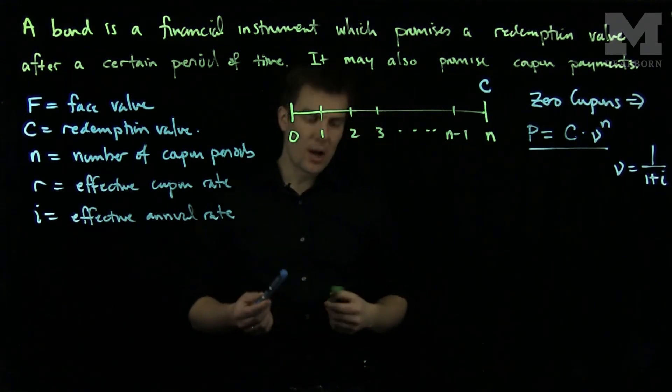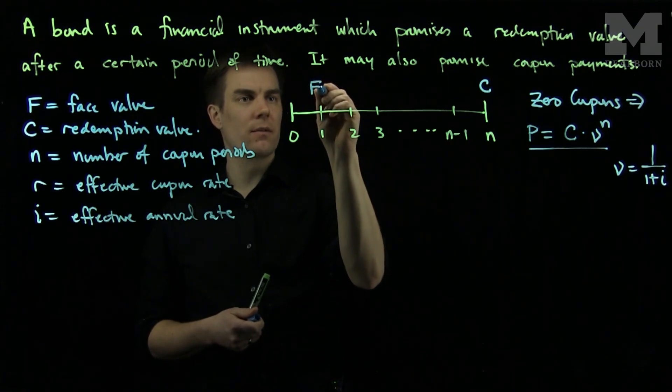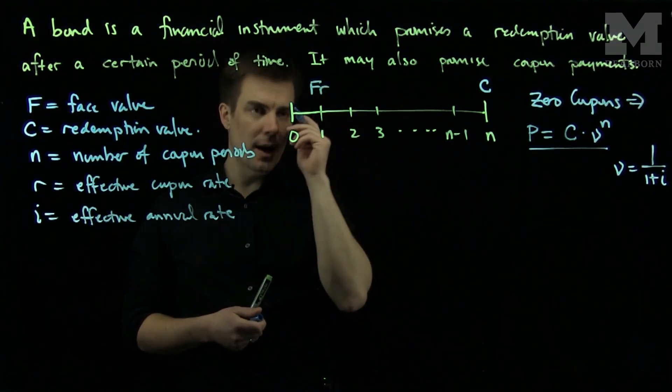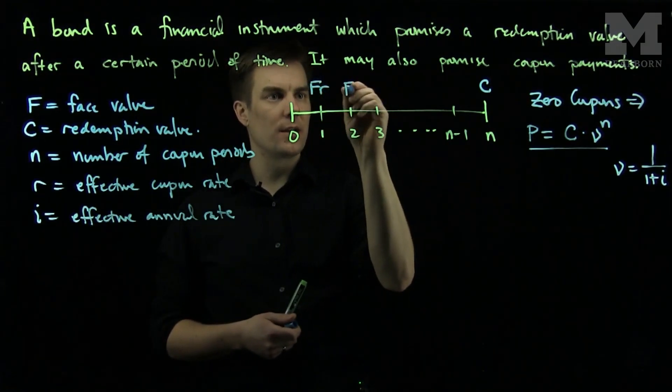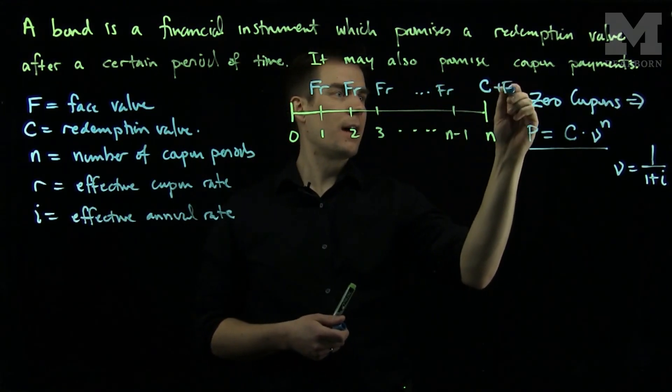Now typically bonds will offer coupons, which means that at each of these individual coupon periods, I will earn the face value of the bond times the coupon effective rate. So I have FR, FR, FR, and FR at each period.